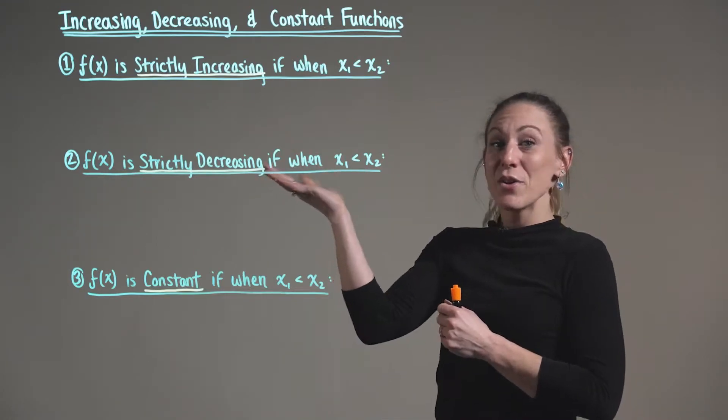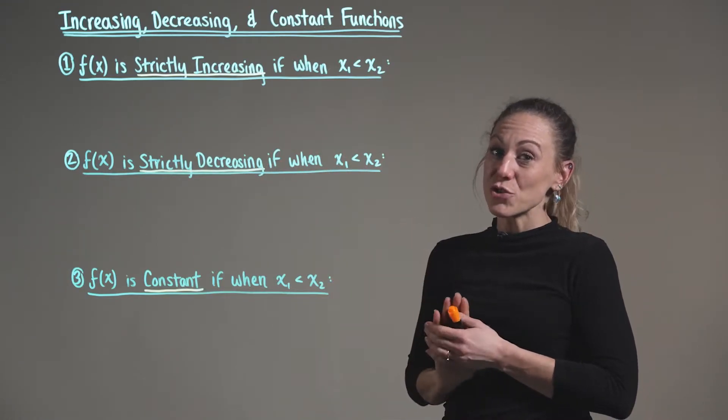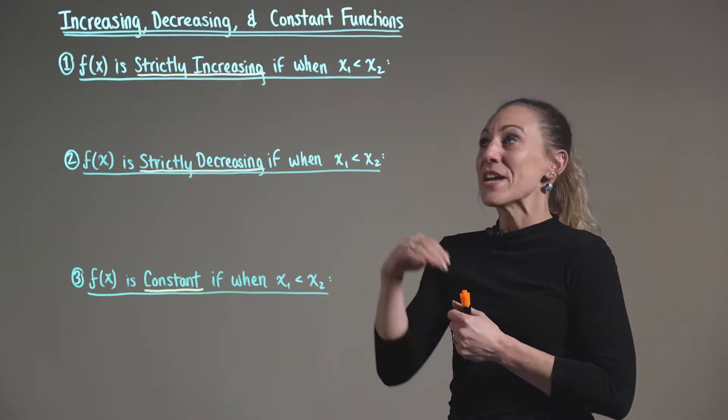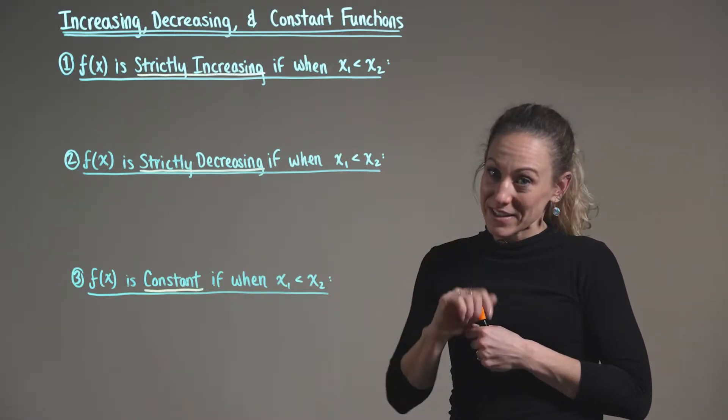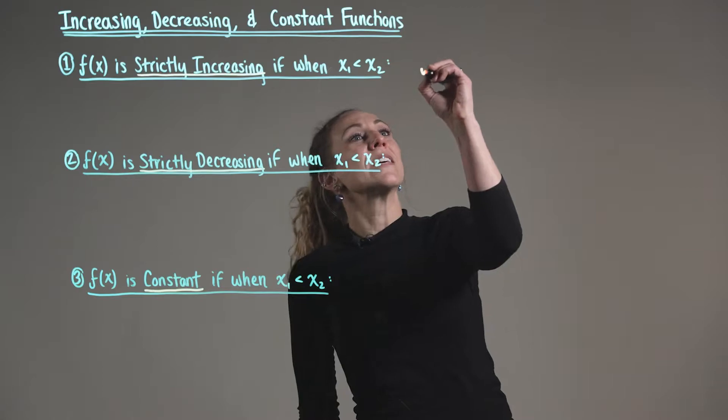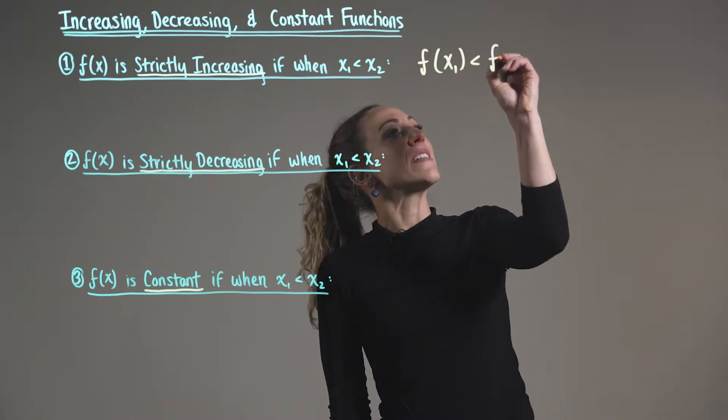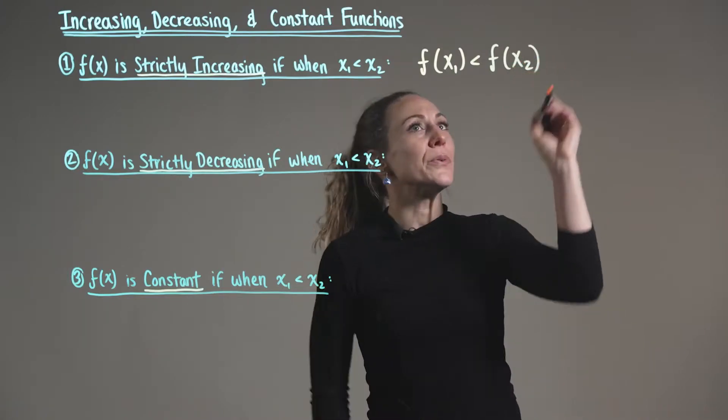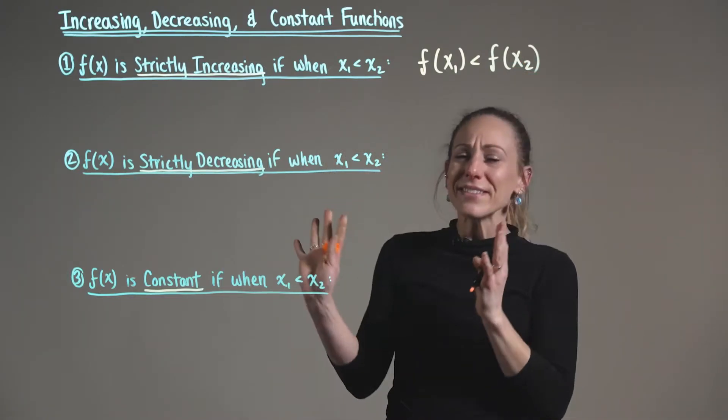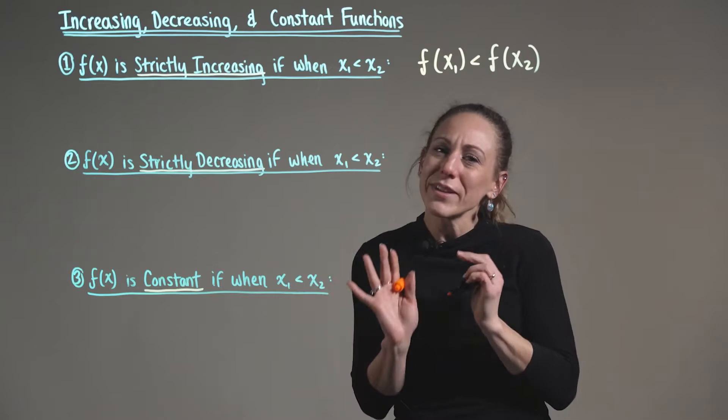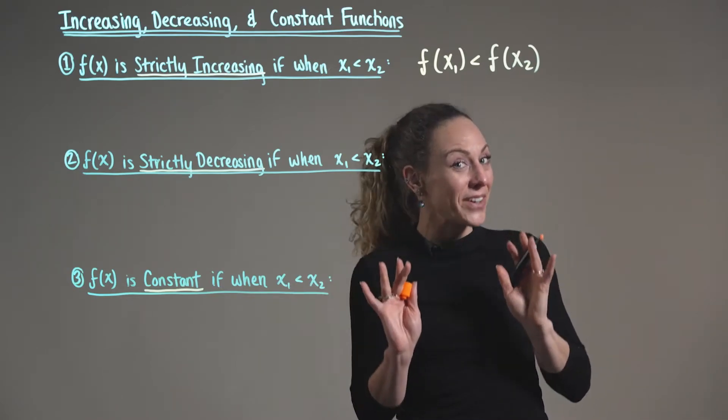Now in case one, we say that f of x is strictly increasing if when x sub one is less than x sub two, then we have that f of x sub one is less than f of x sub two. Now this is a lot of formality, so let's break this down into easier to understand terms.